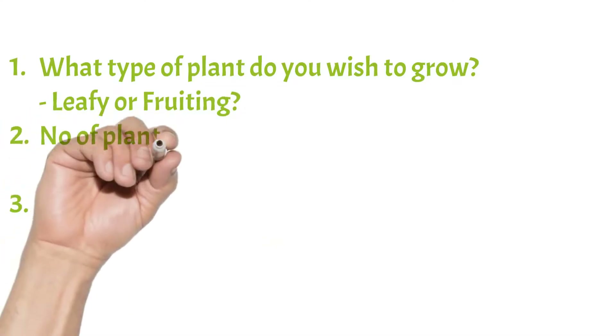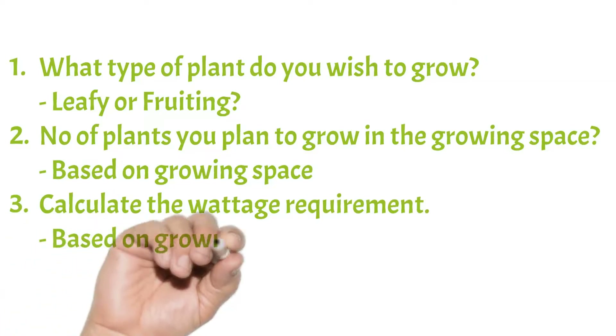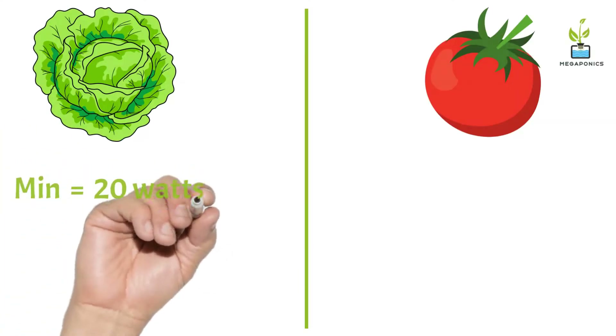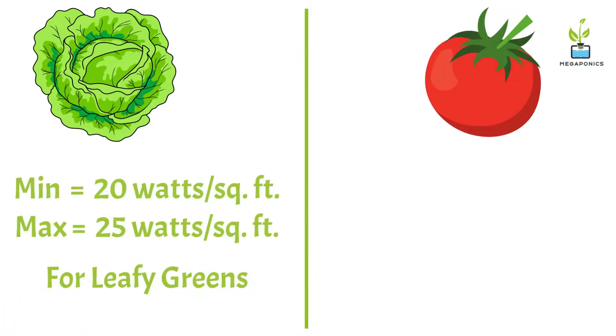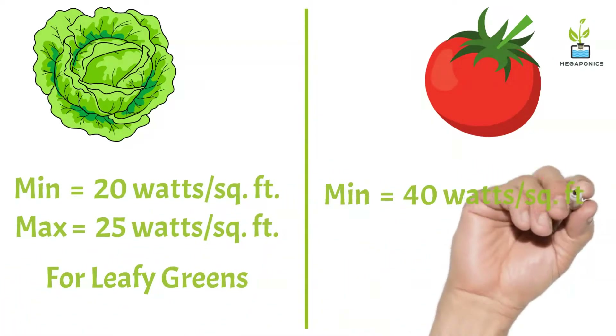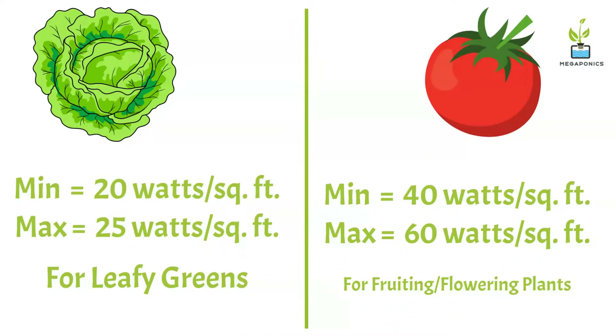Sufficient light is very important to grow healthy plants. There are three factors to consider before choosing a light: what type of plant you wish to grow (veg or flowering), the number of plants, and the wattage requirement. It is advised to use a minimum of 20 watts per square foot and a maximum of 25 watts per square foot for growing veggies, and 40 to 60 watts per square foot for flowering plants like tomatoes and peppers.